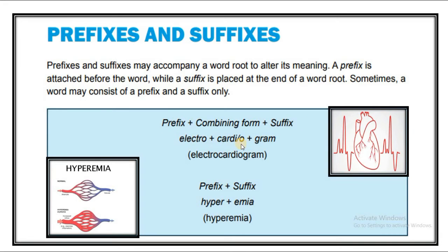For example: electro plus cardio plus gram. Electro is the prefix, cardio is the combining form, and gram is the suffix — giving us electrocardiogram. In electrocardiogram, you can see prefix, suffix, and combining form all together.